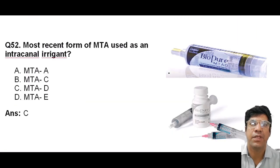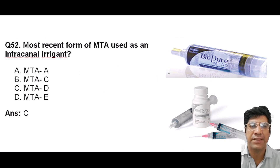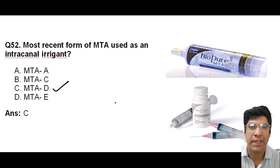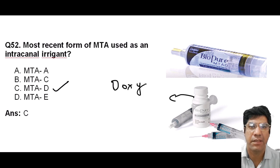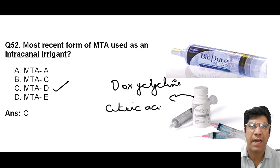The most recent form of intracanal irrigant that is used: the answer is MTAD. MTAD is a specific intracanal irrigant that contains doxycycline, citric acid, and a detergent.